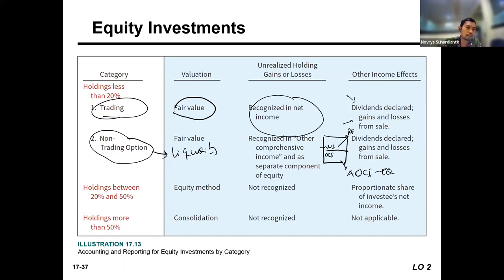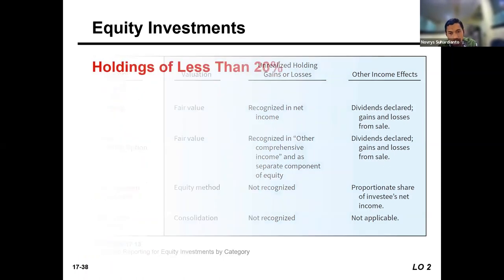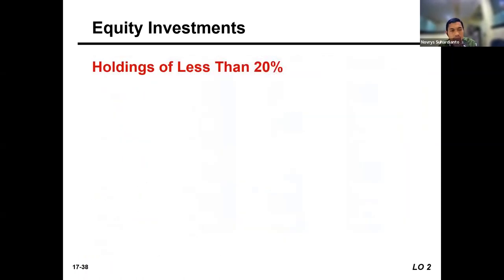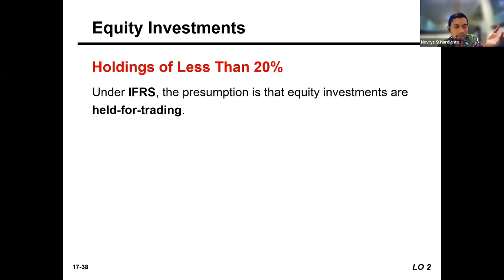For holdings more than 20%, as mentioned, we use the equity method — both the 20–50% and more than 50% classes use equity method, and these will be discussed later in Advanced Accounting 1. Let's focus on the first category: holding less than 20%. If the company holds less than 20%, then the presumption is that equity investments are held for trading.